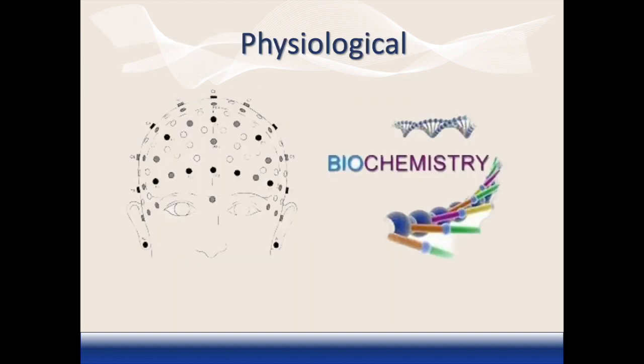Physiological evaluations, such as brain scans or biochemistries, done before and after an intervention provide objective measurements to document change. These evaluations eliminate the risk of subjective bias and can demonstrate a response to the intervention. The results from physiological testing document some fundamental changes that may occur following Berard AIT.